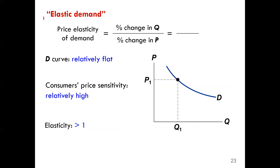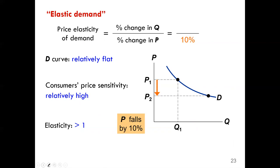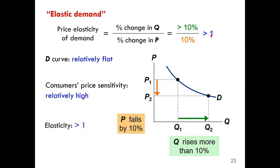The fourth demand curve is elastic demand. Here the curve is flatter, so price elasticity is relatively high — greater than one. When price drops from P1 to P2 by 10 percent, quantity demanded rises by more than 10 percent, giving a price elasticity greater than one.